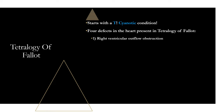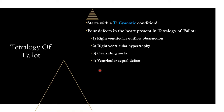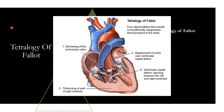The right ventricular outflow obstruction is sometimes called pulmonary valve stenosis, but it's more accurately right ventricular outflow obstruction since it can occur at multiple levels, not just the pulmonary valve. Right ventricular hypertrophy is caused by the right ventricle pushing hard to overcome the outflow obstruction — when the heart works too hard, it hypertrophies. Third, the aorta actually shifts over to the right, sitting right over the ventricular septal defect.